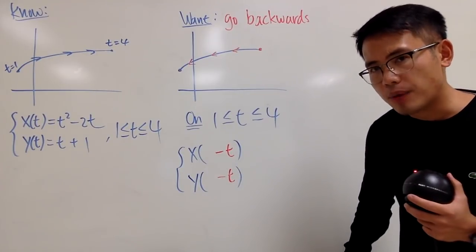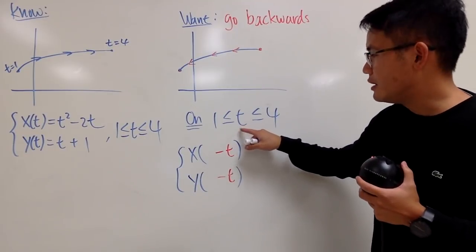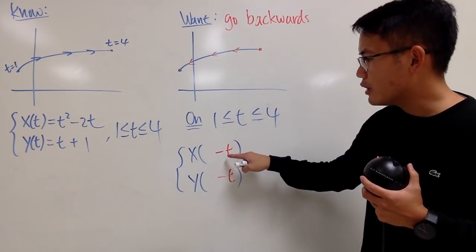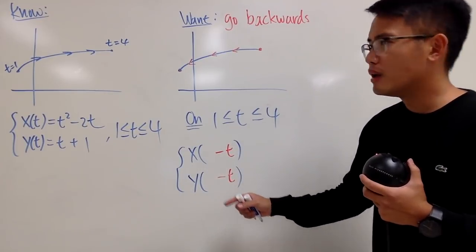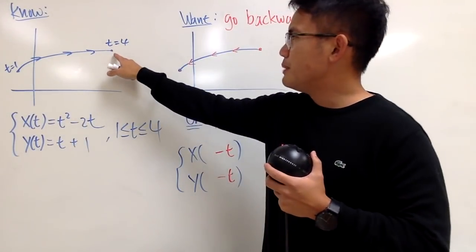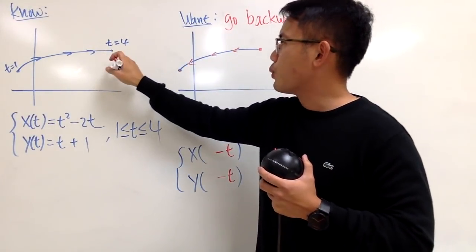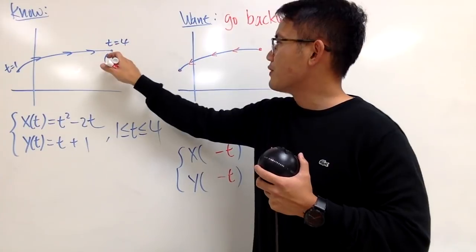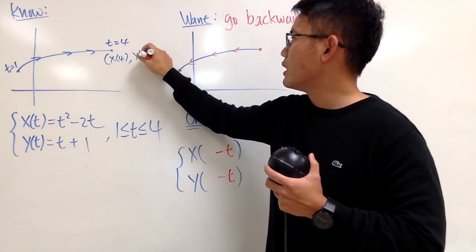Well, here's the problem. Remember, right here I still have to start when t is 1. And when you plug in 1 right here, you get x of negative 1 and y of negative 1. But, ideally speaking, you want to start right here. This point was when t was 4. So that's x of 4 and then y of 4, like this.